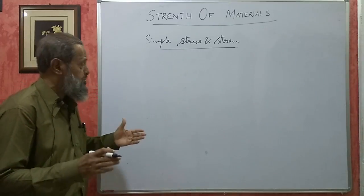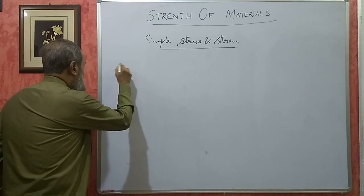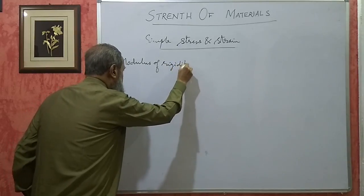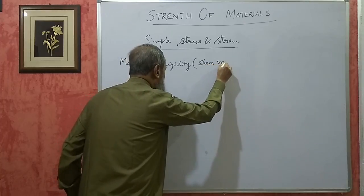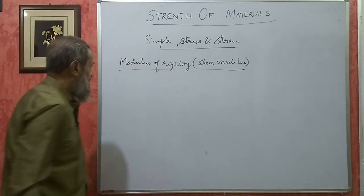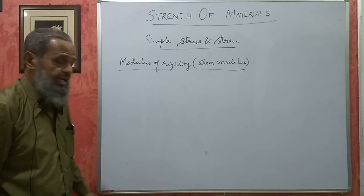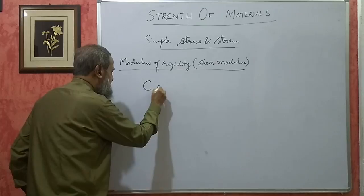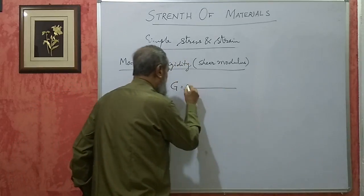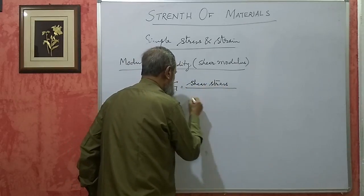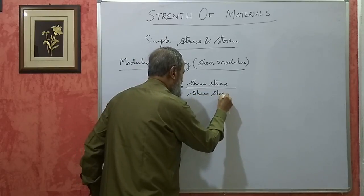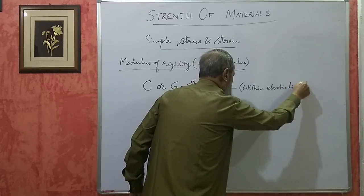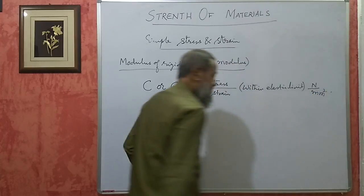We have come up to the definition of Young's modulus. Apart from Young's modulus, we also have what we call modulus of rigidity, or it is also called as the shear modulus, and one more is the bulk modulus. These are the three moduli that are there for a material. This modulus of rigidity or shear modulus is denoted by C or G. It is defined as a ratio of shear stress to shear strain within elastic limit. Its unit is Newton per mm square, same as Young's modulus.